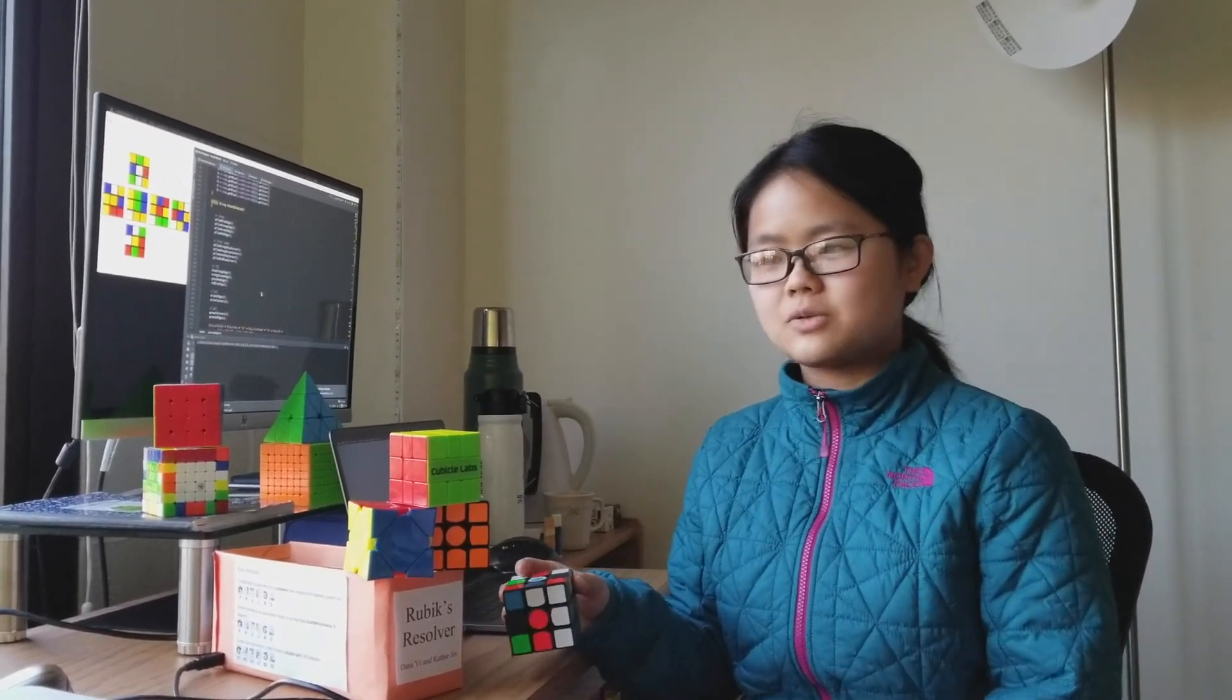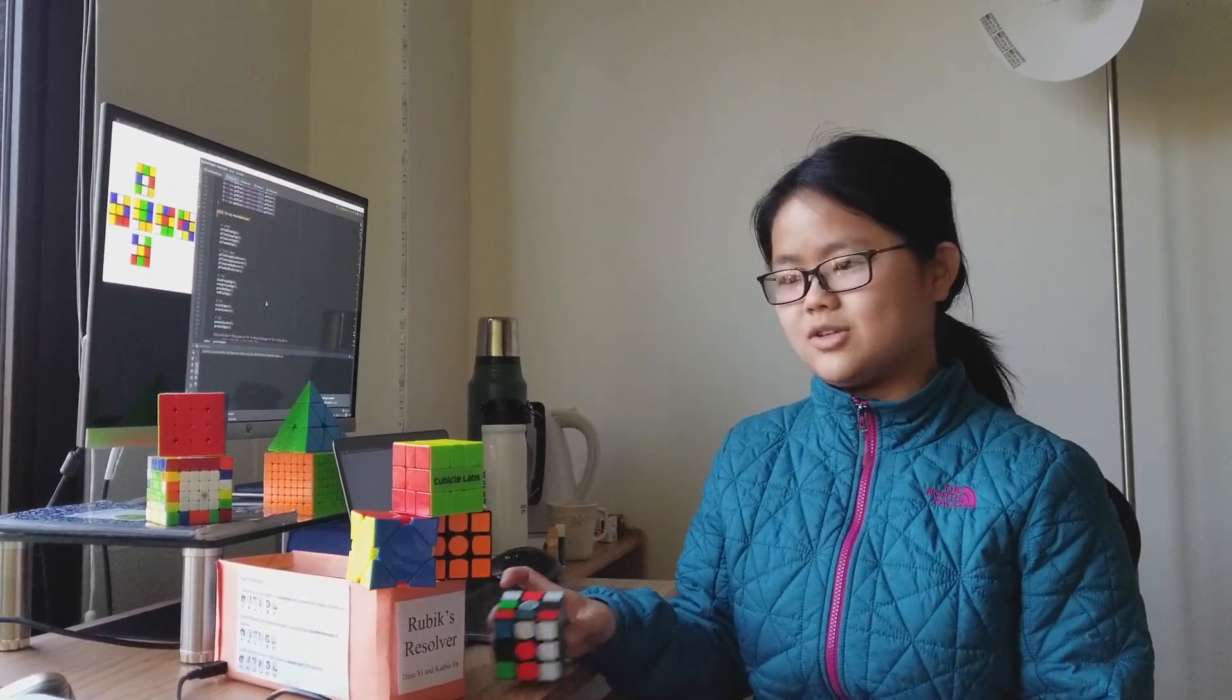Sadly, we don't have Google supercomputers or enough RAM to run the actual optimal algorithm. Our software averages about 50 to 60 moves to solve, while the optimal solution is 20 moves. Therefore, our program mimics how a person who would just learn how to solve the cube would solve it.